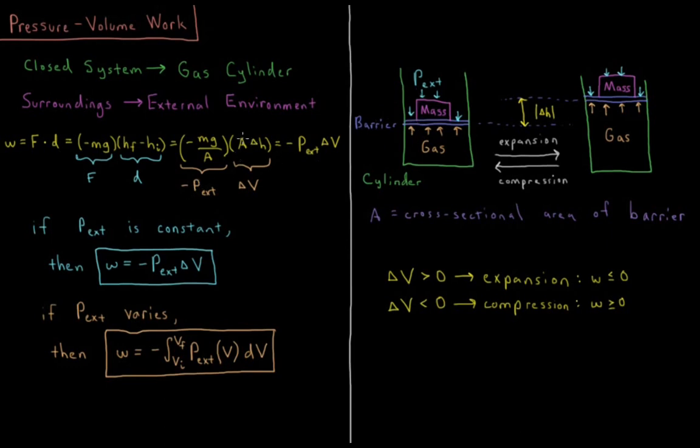And then similarly, the cross-sectional area of this barrier times the displacement of it, that's the change in volume of the system. Area times height is volume. Meters squared times meters gives us meters cubed, the SI unit of volume. So the total work that's done by the system is the negative external pressure times the change in volume of the system.